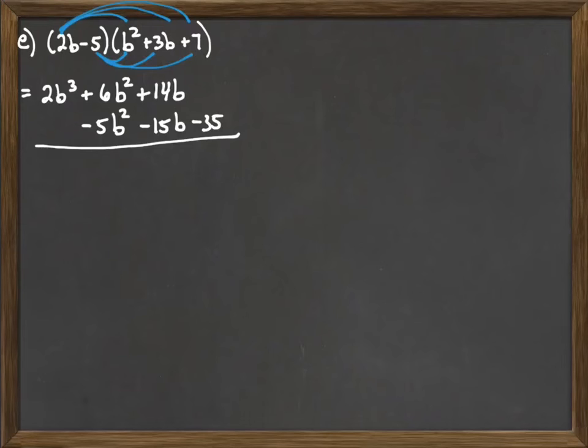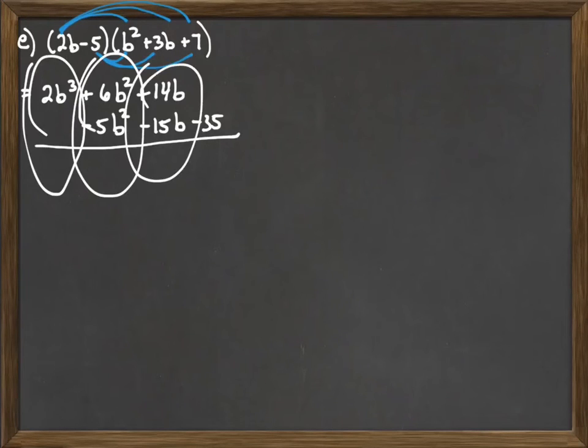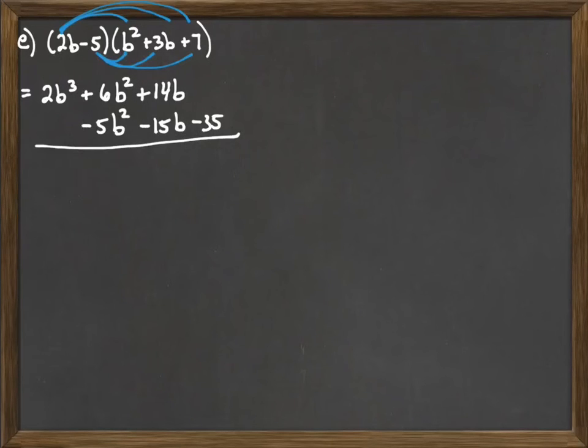And then what we can do is we can just go through and add down, putting each of my like terms together. So there are no other b cubed terms, so I just write down my 2b cubed.